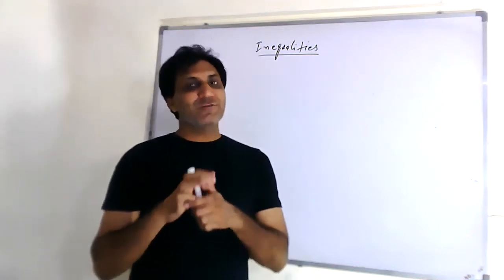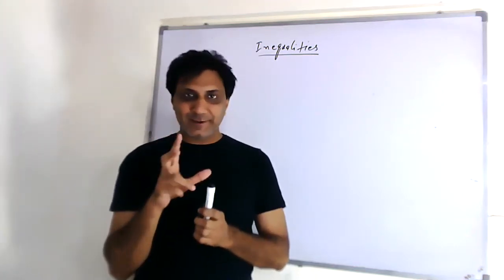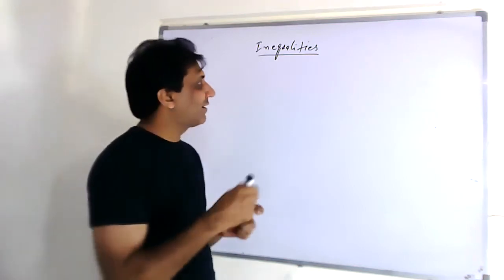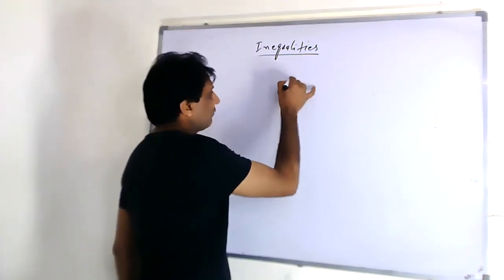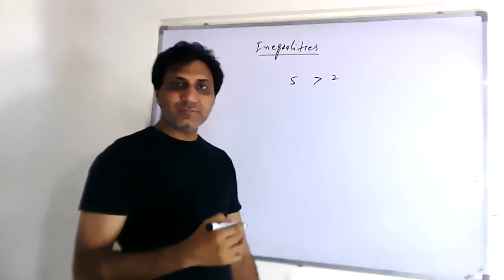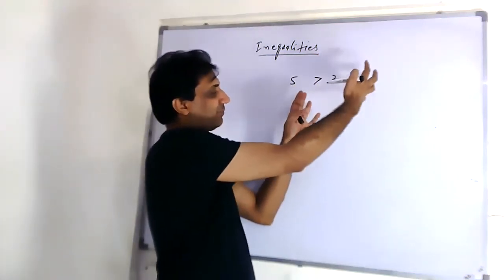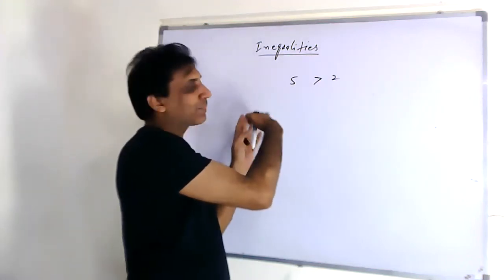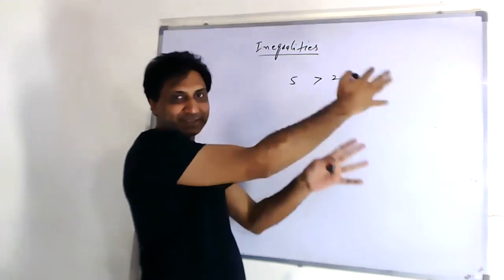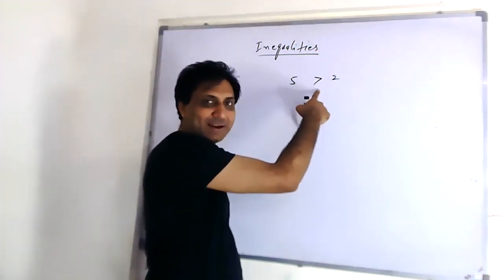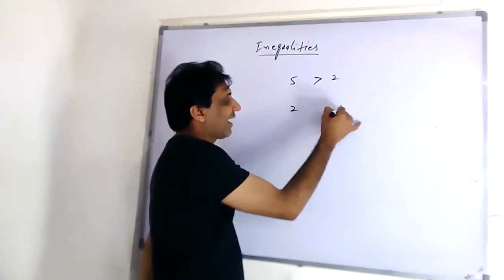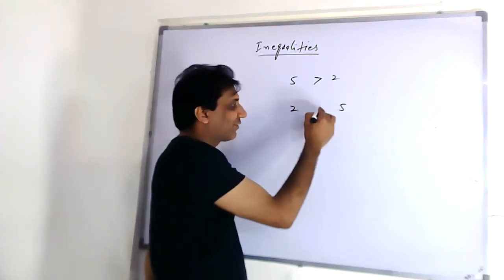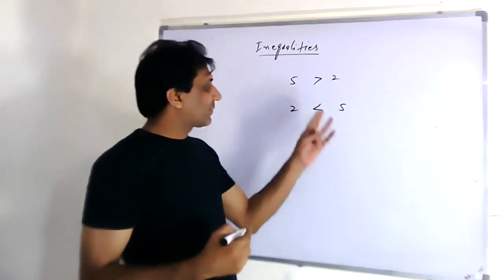When we reverse the sign of inequality from greater than to less than and from less than to greater than. For example, 5 is greater than 2. When you bring this whole part from right side to left side and this whole part from left to right, you have to change this inequality. Now will you put greater than? No, 2 is less than 5 now.